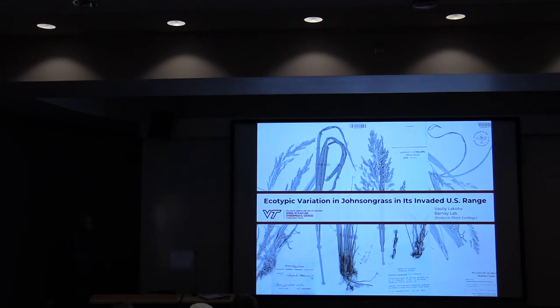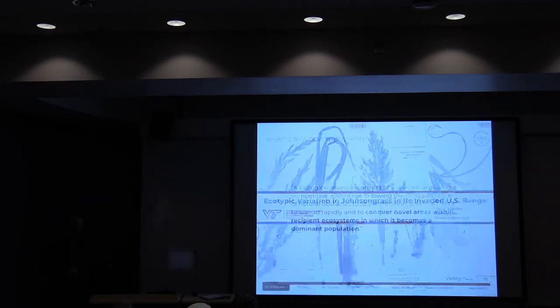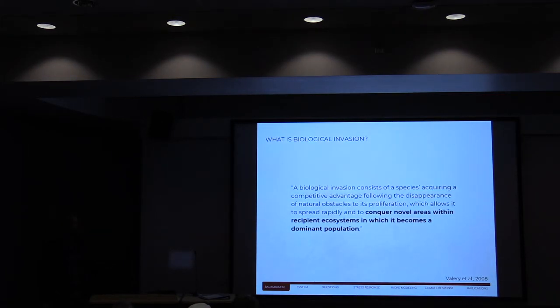I'm going to be talking about ecotypic variation in Johnson grass and its invaded U.S. range. It's important to begin with a definition of terms. At a very basic level, biological invasion consists of a species acquiring competitive advantage following the disappearance of natural obstacles to its proliferation, which allows it to spread rapidly and conquer novel areas within recipient ecosystems in which it becomes a dominant population.